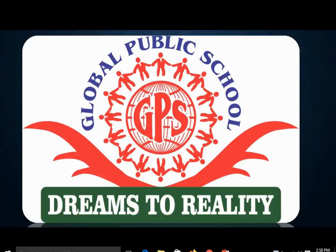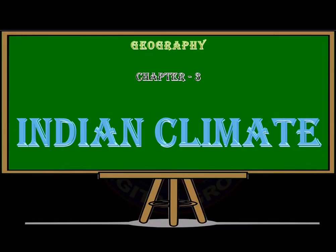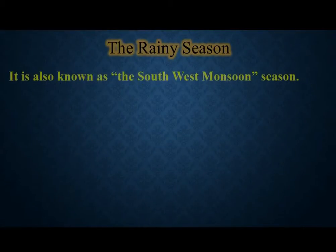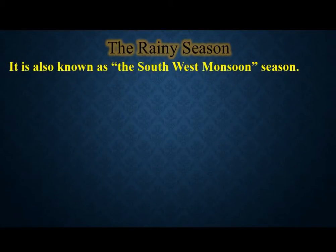We also talked about the rain which falls in the summer season and what we call that rain. In today's class we are going to talk about a different topic — that is the rainy season. Rainy season means we all know the rain will fall in that season. This season is also known as the southwest monsoon season.